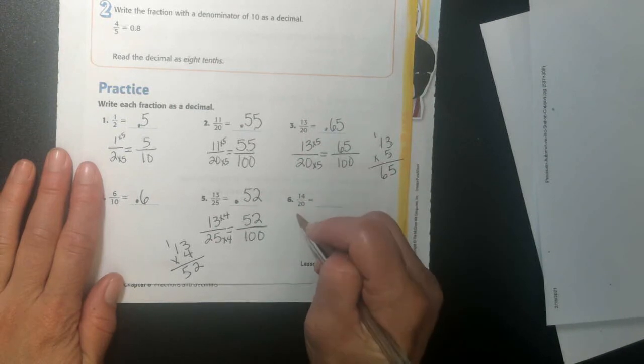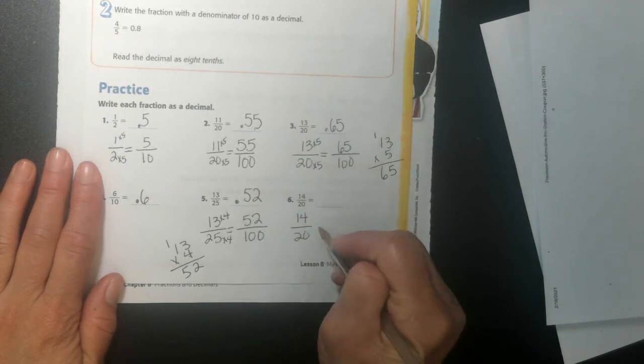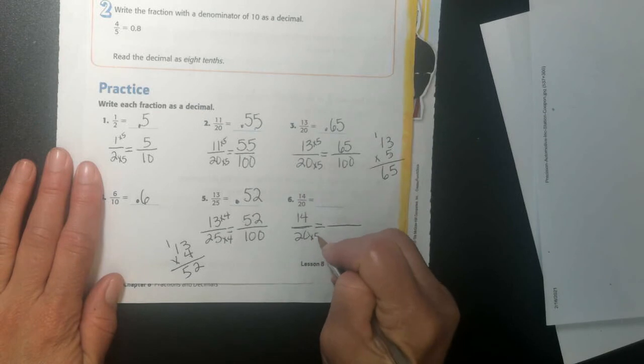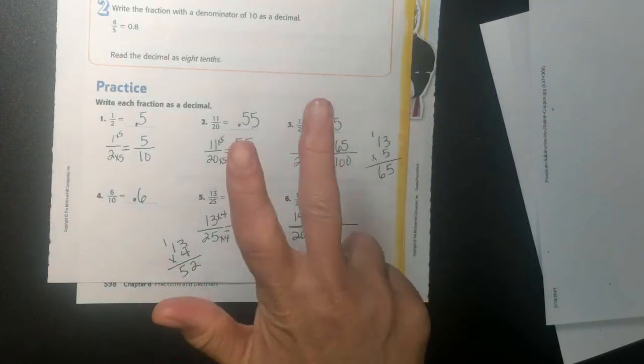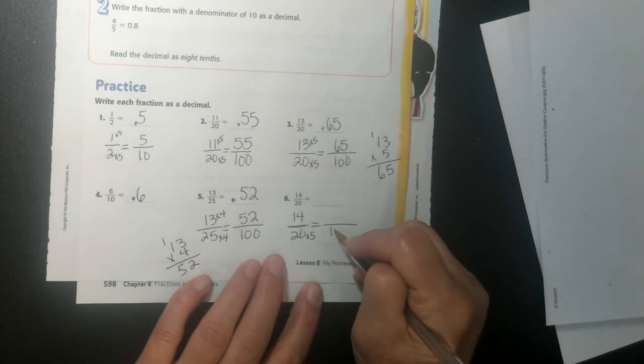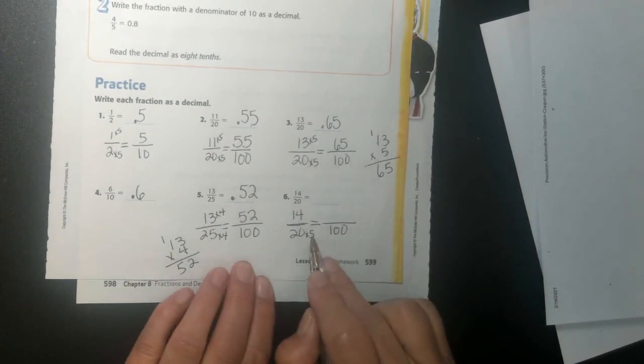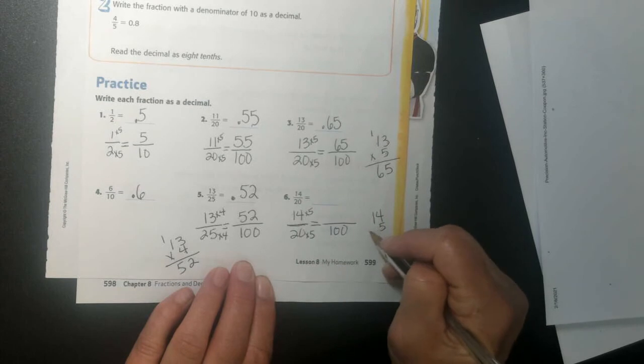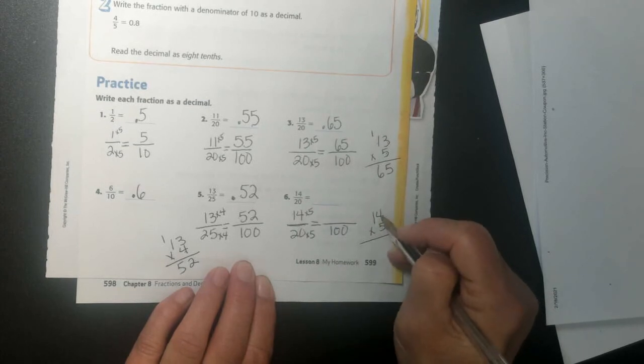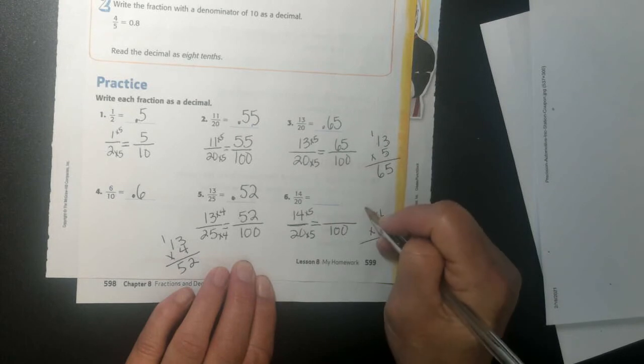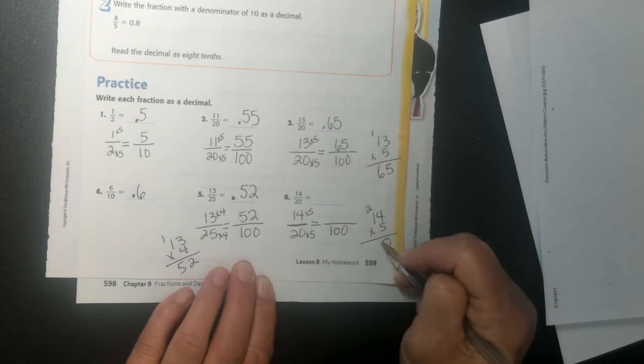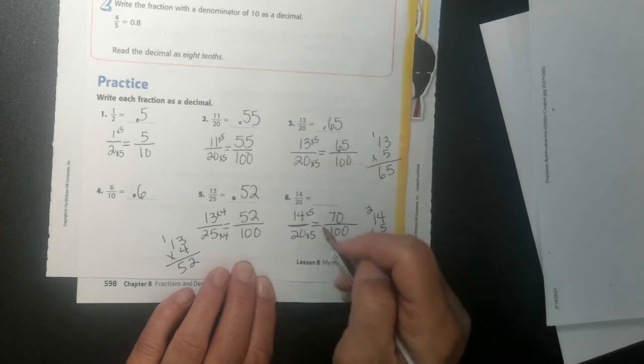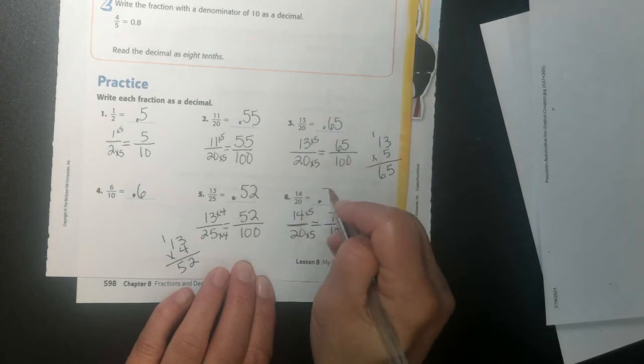14 over 20. So 14 over 20, I'm going to change my 20 into 100. So I'm going to multiply it times 5. 20, 40, 60, 80, 100. And so I multiply times 5, I have to multiply the top times 5. Do you know it? 14 times 5. Right, I do 4 times 5 is 20, I carry my 2. 5 times 1 is 5, plus 2 is 7. So I have 70 over 100. So to write it as a decimal, I put 0.70.